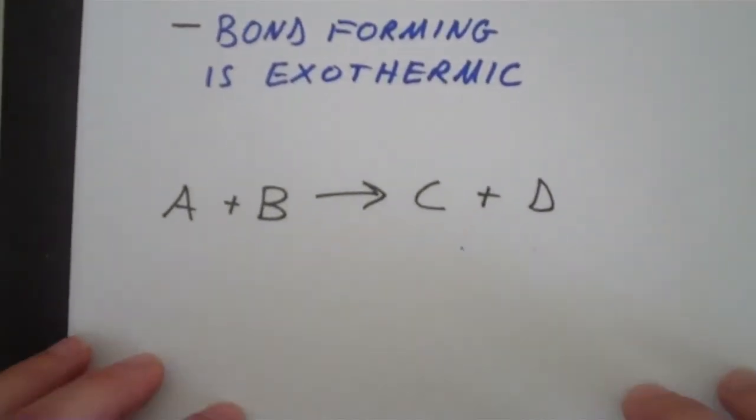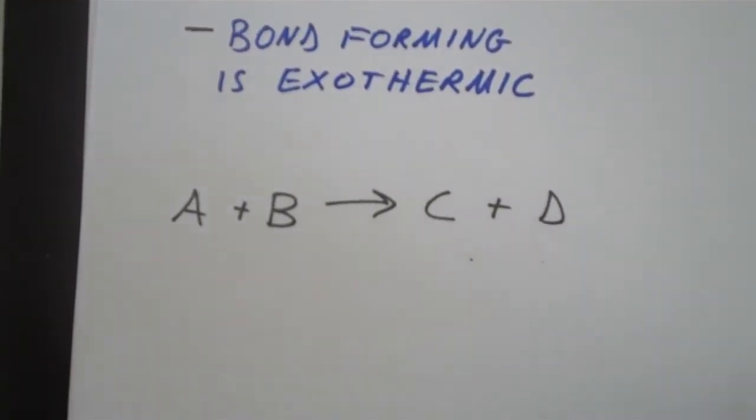Let's say we have a basic reaction scheme here, where A and B are my reactants, and C and D are my products. What's going on in this chemical reaction?